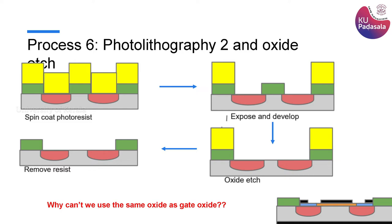Doping will happen only at the two sides and not at the middle. Now, for the steps coming forward, we do not want this middle oxide, so we have to remove it. For that we need to do another photolithography where we spin coat photoresist and then use another mask and expose the photoresist to light in such a way that the photoresist will stay only at the edges where the oxides are, and all other areas the photoresist has to be removed.